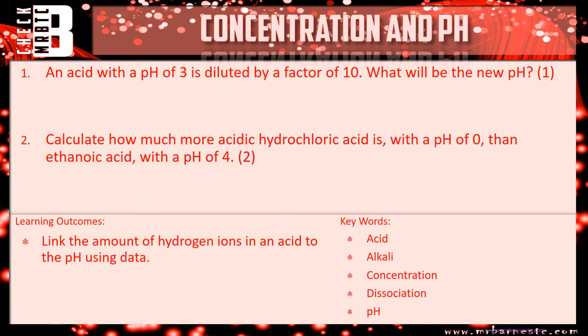Right, let's have a look. So the first one says, an acid with a pH of 3 is diluted by a factor of 10. What will be the new pH? So the first thing, as I said, draw out something like this. You're starting off with a pH of 3, and we're diluting by a factor of 10. So diluting means it's going to go up like that. If it's only by 10, that means it's gone up by 1. So your answer is a pH of 4.